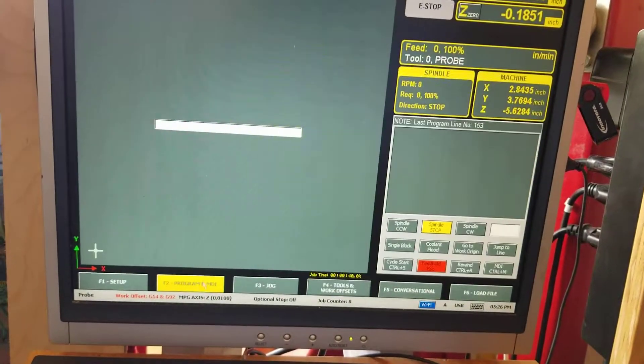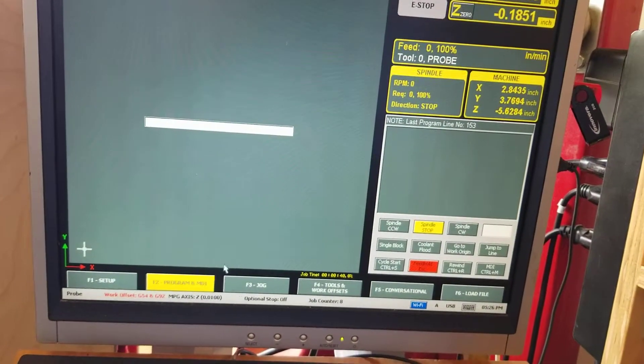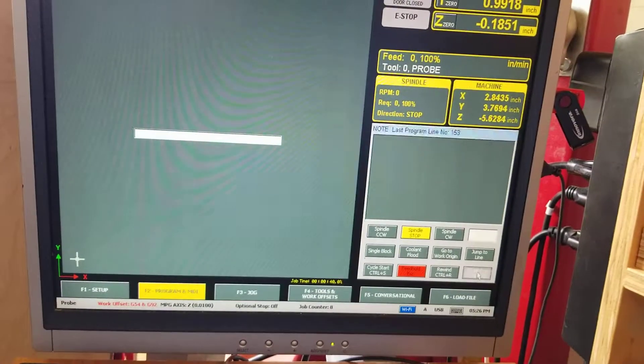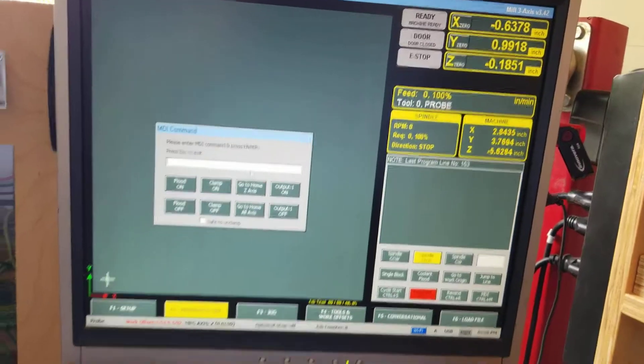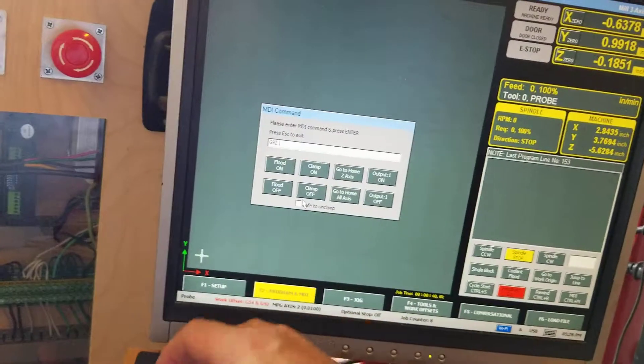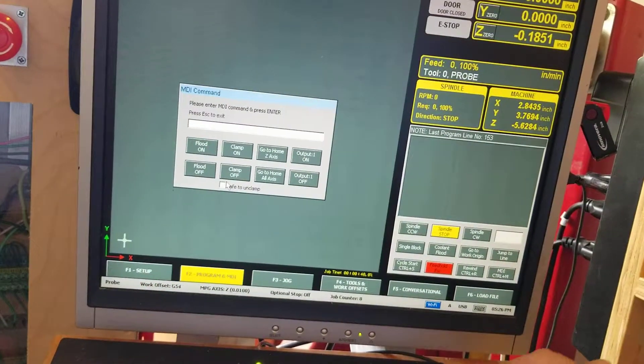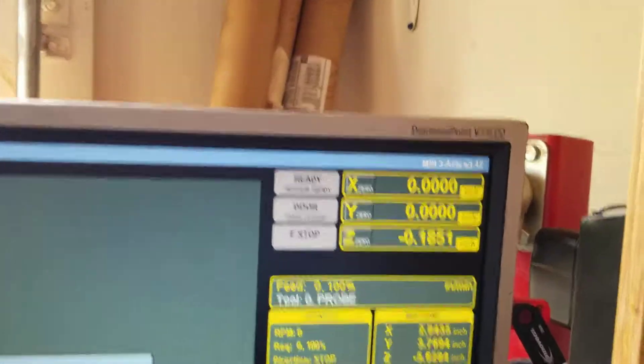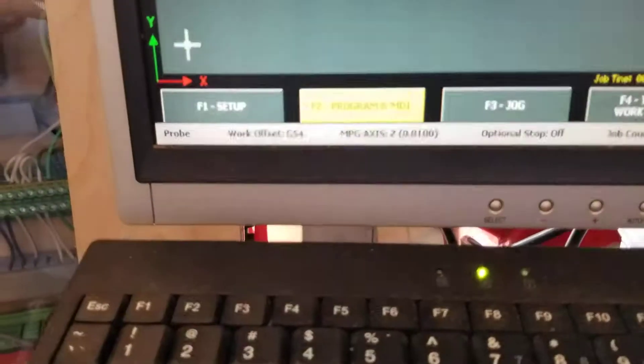And now I've got my hole center exact. All I have to do is MDI and enter G92.1 and that's it. We're centered up in G54 mode.